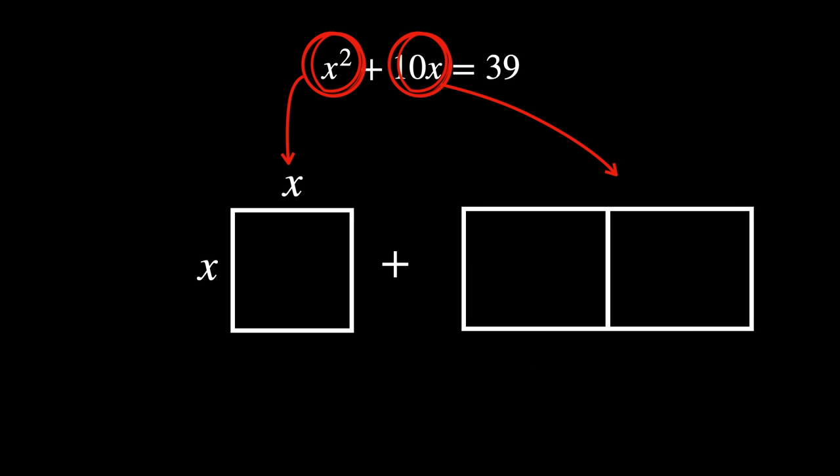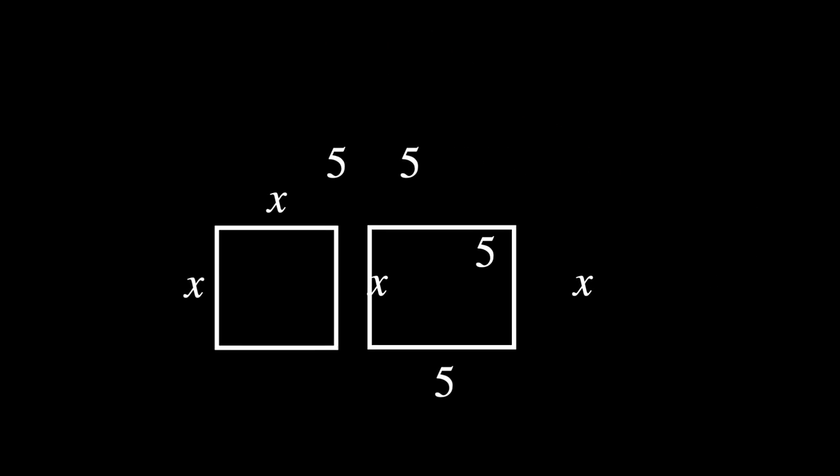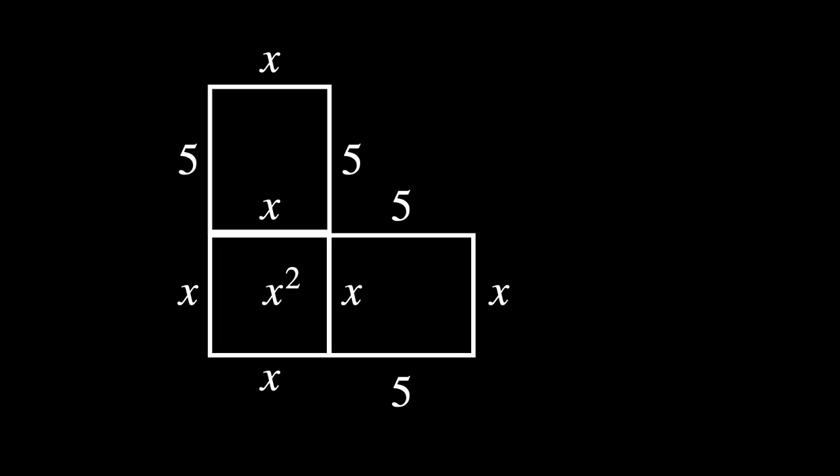The longer side would be equal to 5, while the shorter side is equal to x. The rectangles then are attached by their x sides to the square where all sides are equal to x. The total area would equal 39.